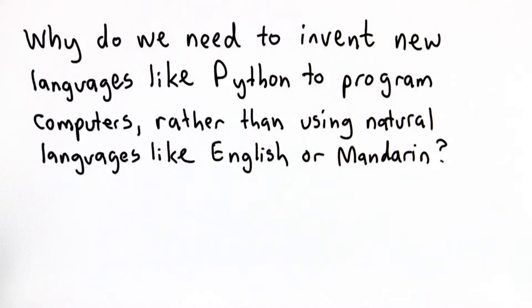And there are lots of reasons for that. Natural languages like English or Mandarin are great for people who grow up speaking them for day-to-day conversation, but there are many reasons that they wouldn't work well for programming computers. The first one is ambiguity.